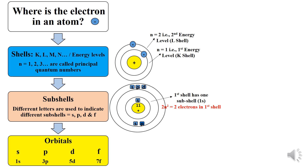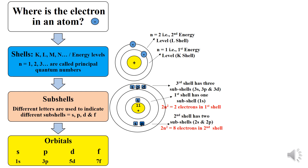The first shell has one subshell, which is 1s. The second shell has two subshells: 2s and 2p. While the third shell has three subshells: 3s, 3p and 3d. The general formula to calculate the maximum number of electrons in each shell is 2n². For the second shell, n equals 2, so 2 times 2² gives 8 electrons.